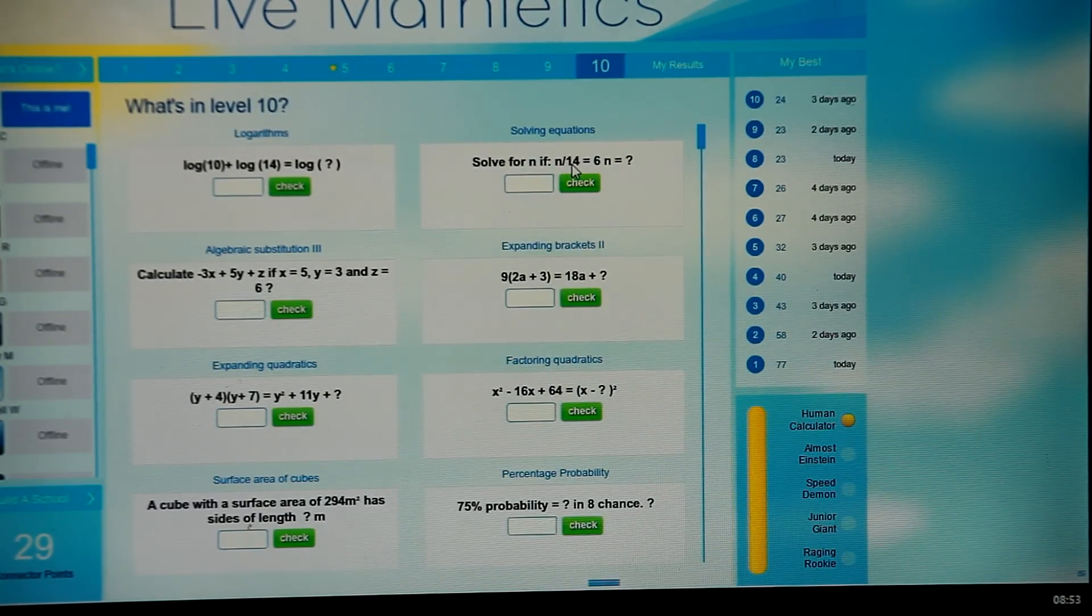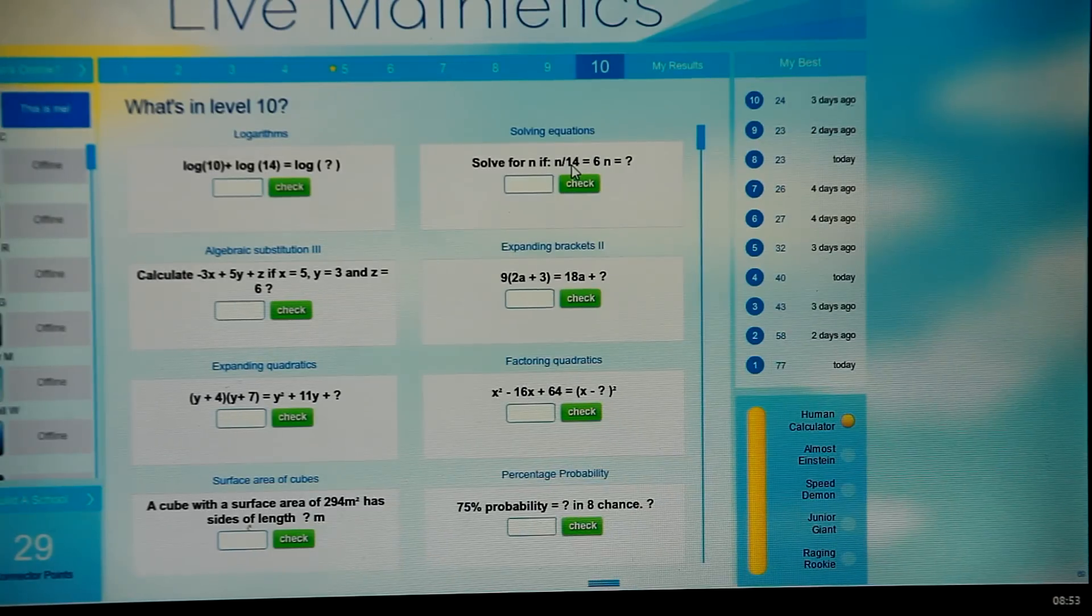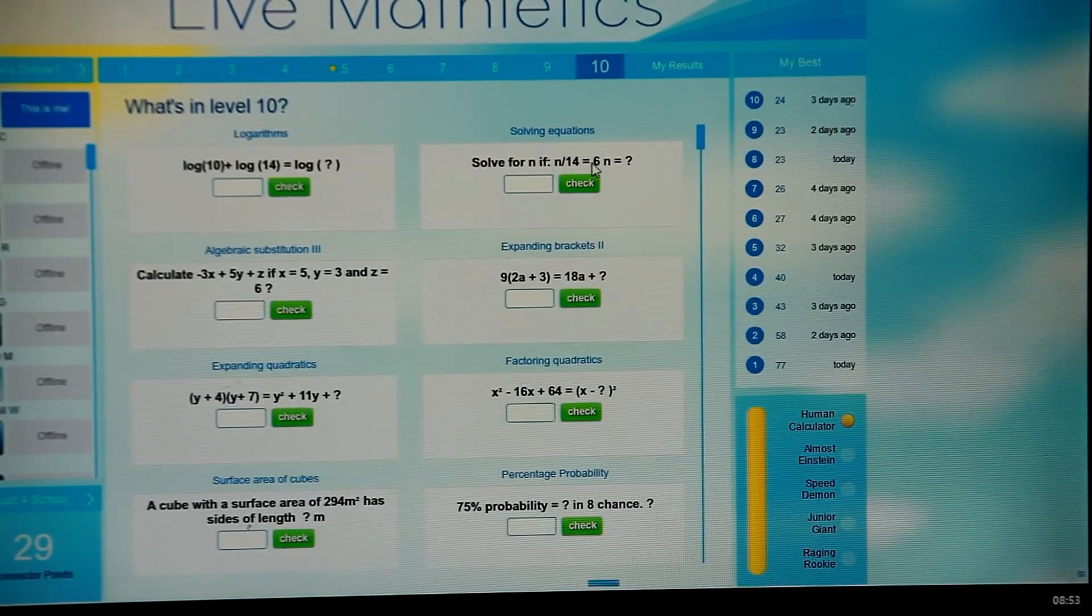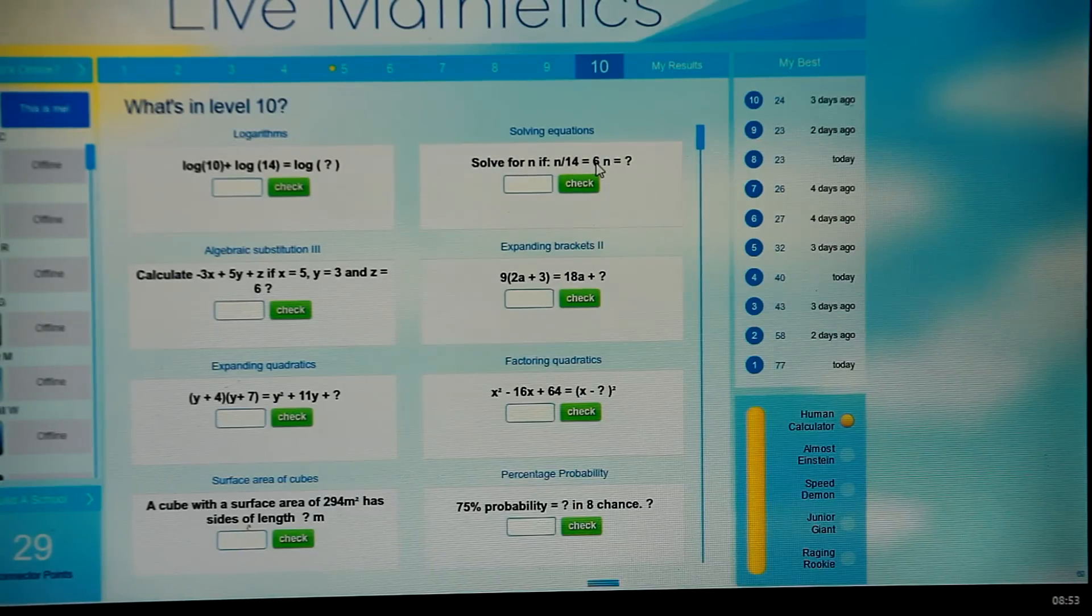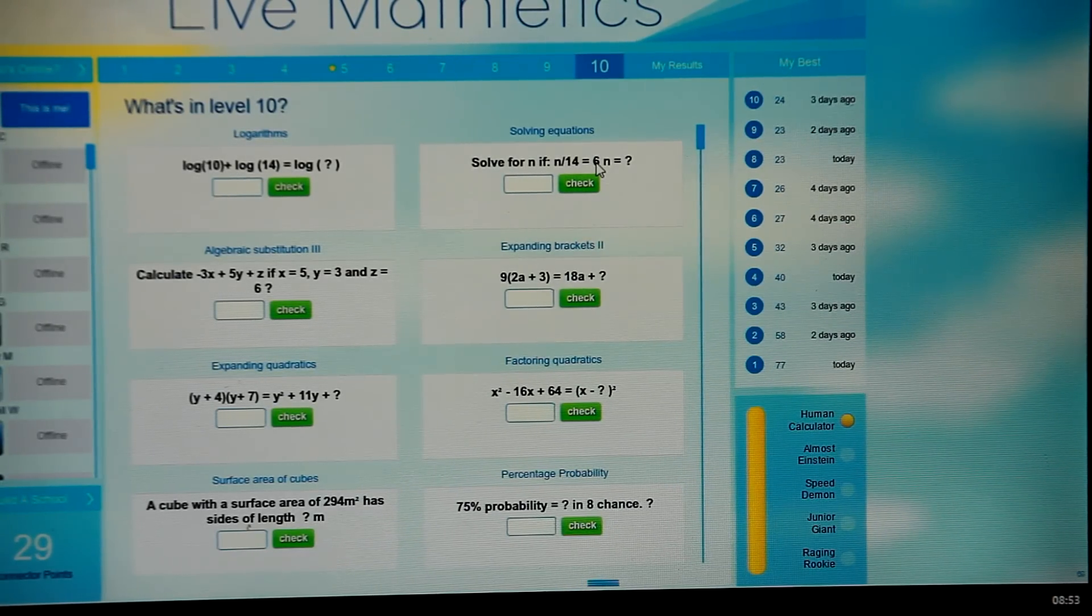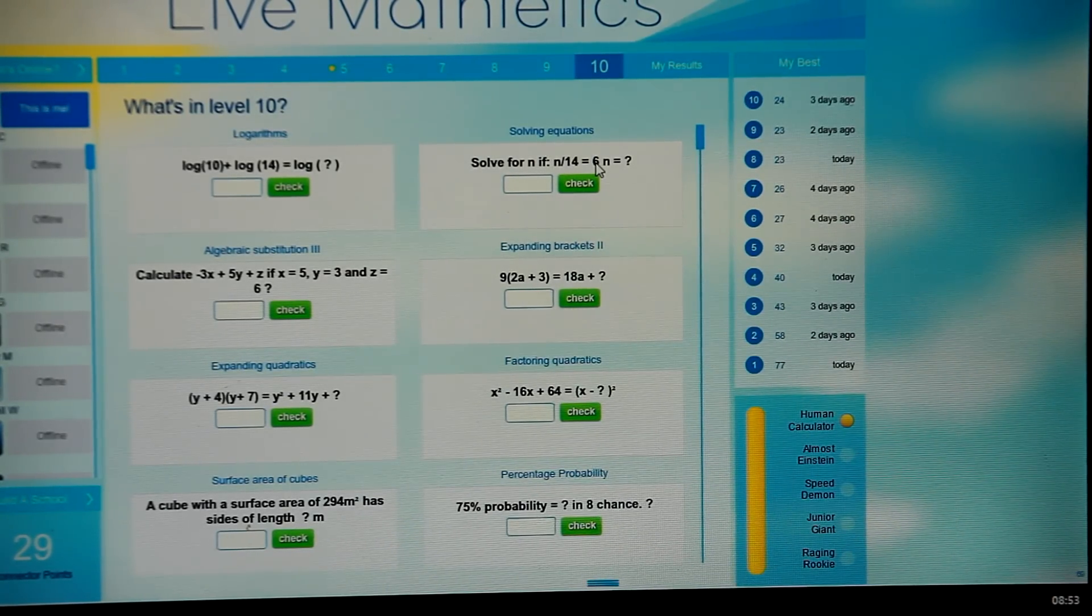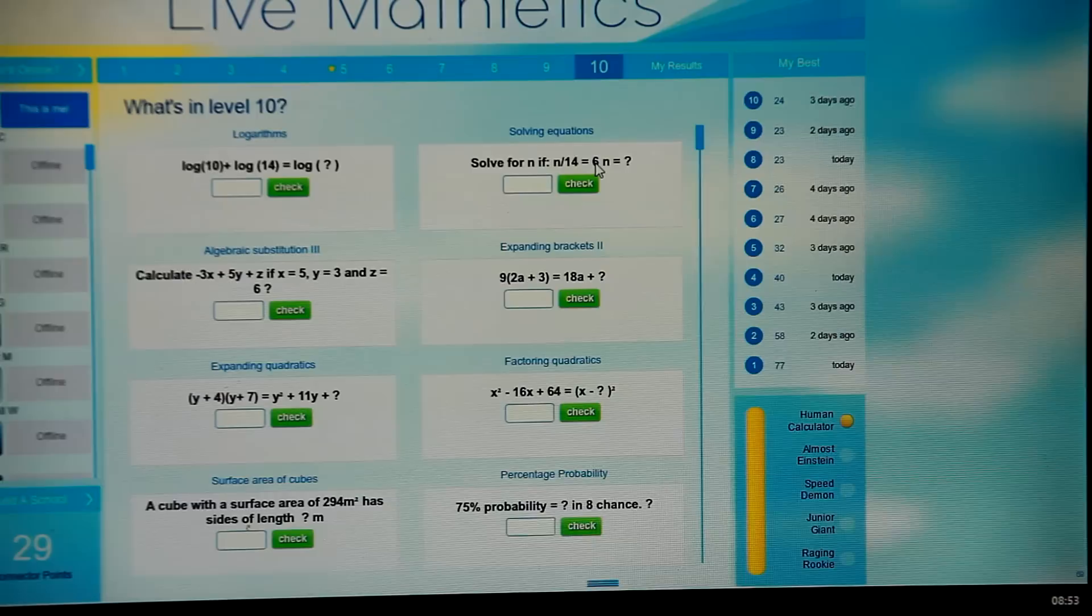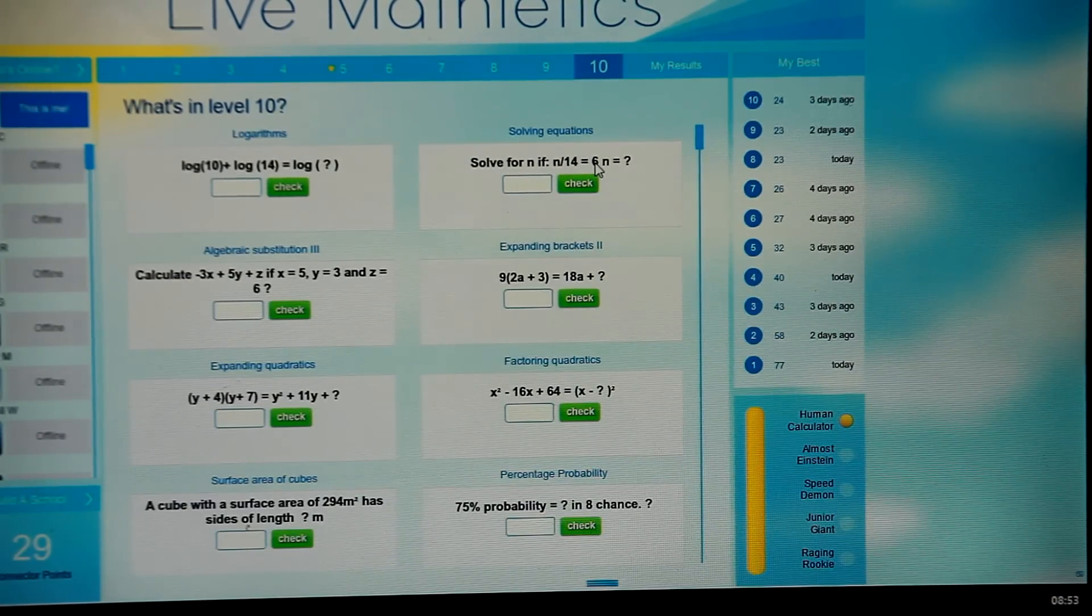What you're really doing in this case is multiplying each side by 14, so you would just say n equals 6 times 14. And if you want to work those things out quickly, you can think of 12 times 6 and add on two more sixes, another 12.